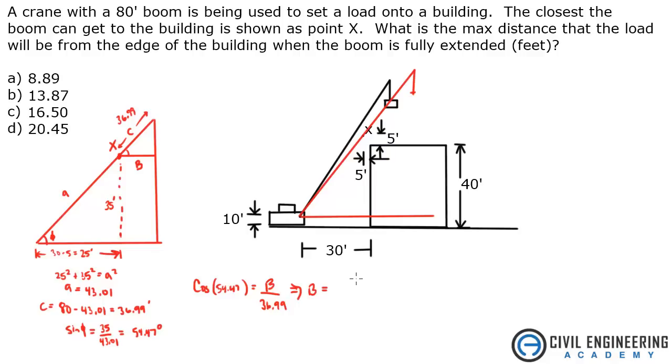So that B is from point X over to the load. But the question is asking, what is it from the edge of the building? So we've got to subtract 5 feet to get the distance that we're looking for. So if we subtract 5 feet, that gives us 16.5 feet, and the answer to this is C.